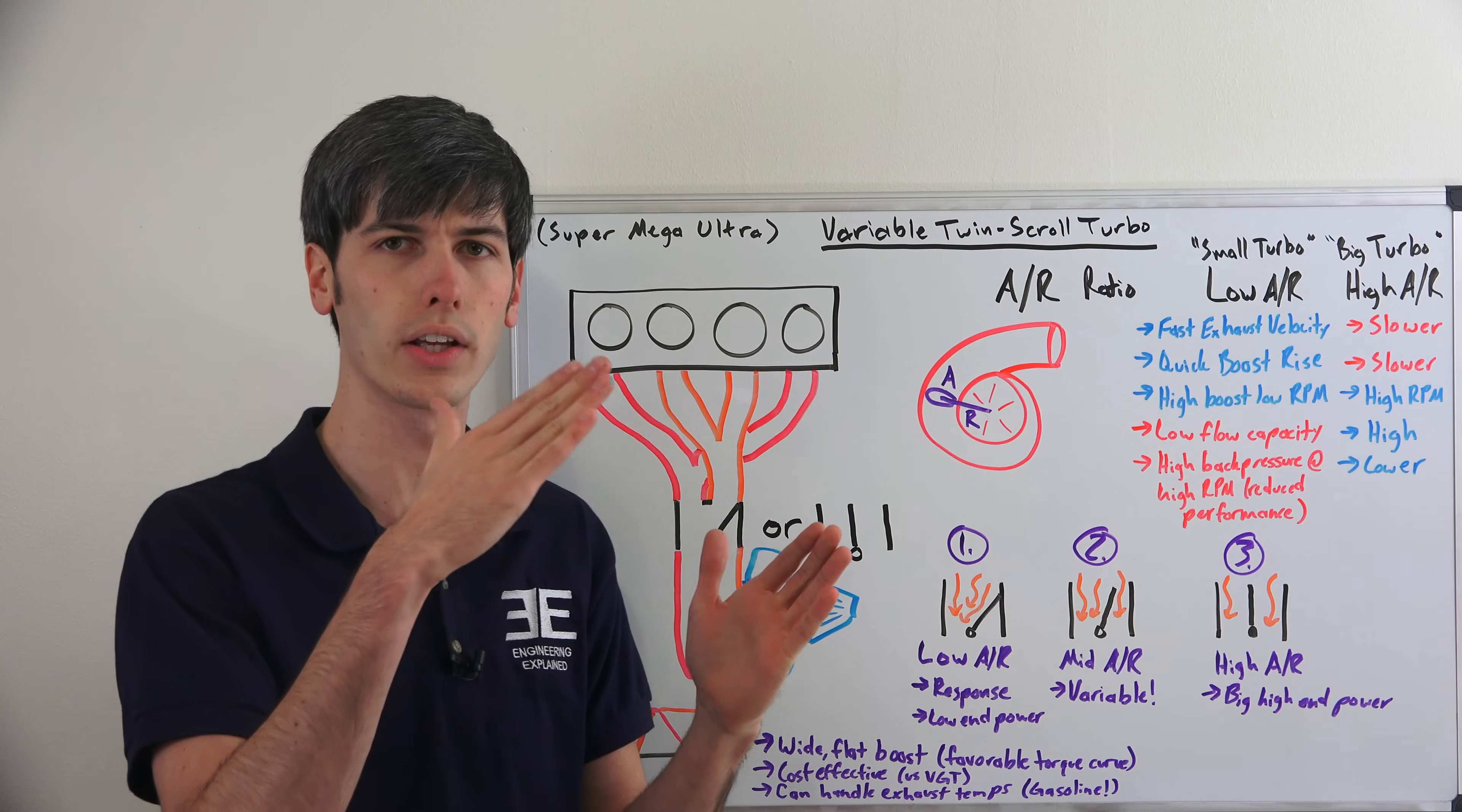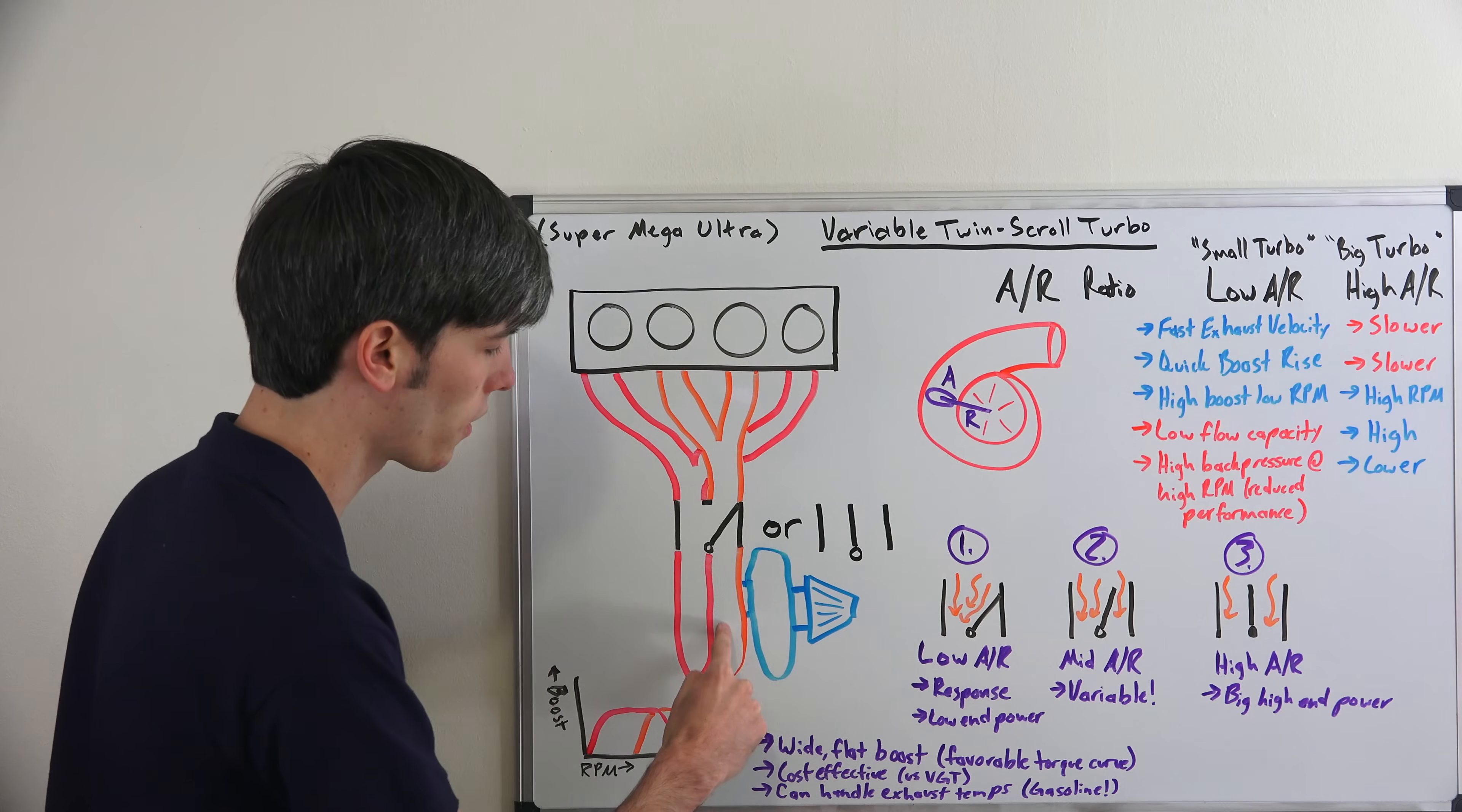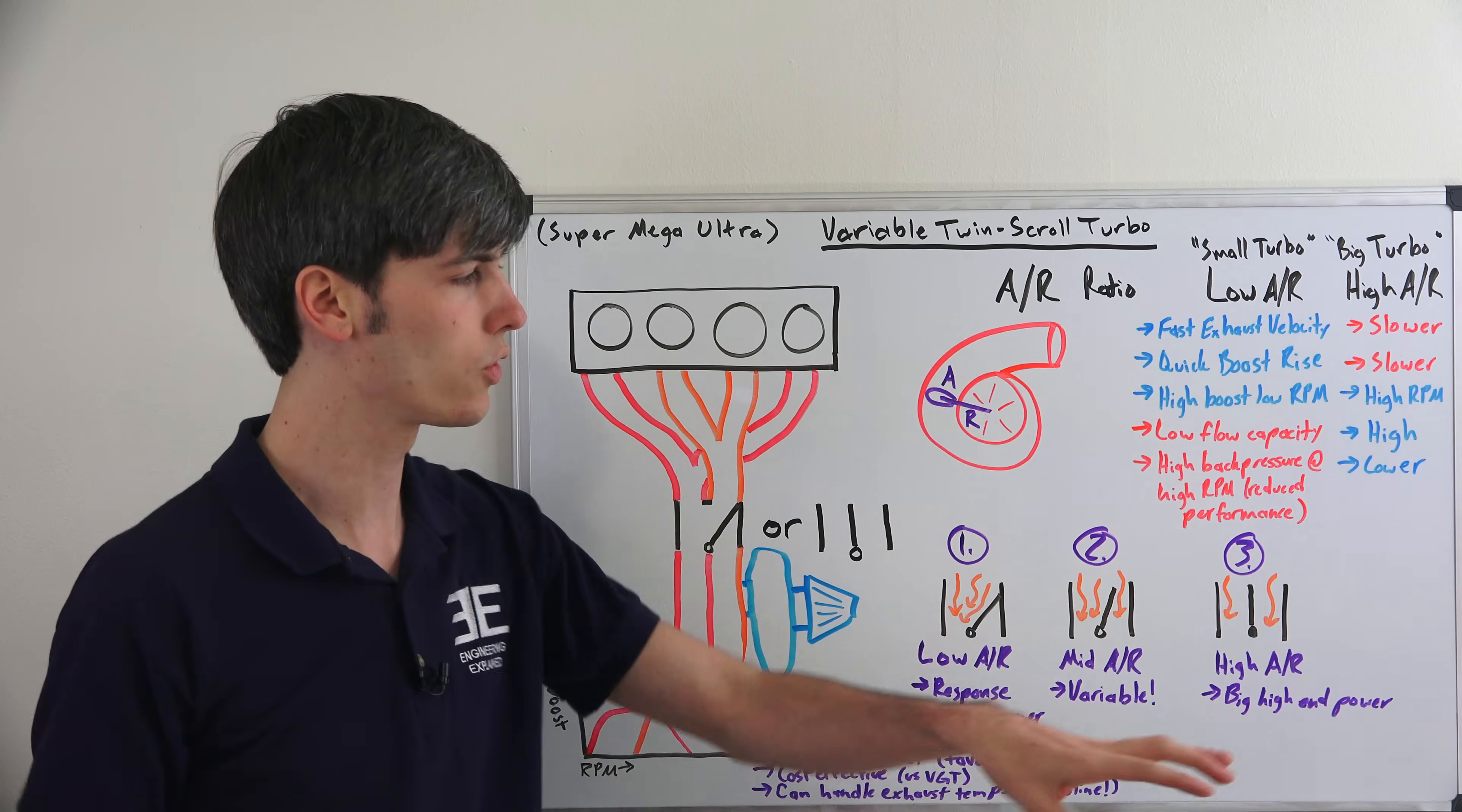Then as you start to increase RPM and get up into higher RPMs, the lever here is going to start to open up. So this valve is going to start opening and that's going to allow some of the exhaust gases to pass into the other scroll. Now this is completely variable, so it doesn't just flick open. It's actually a variable process so it can open slowly and you can have a gradual process of getting into both scrolls.